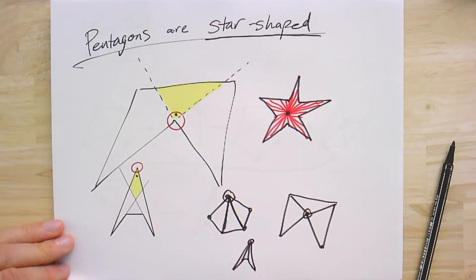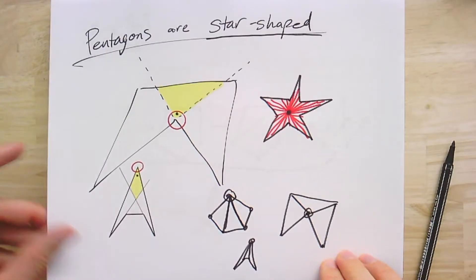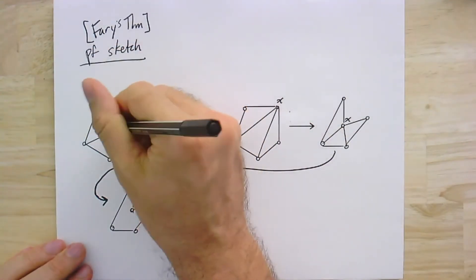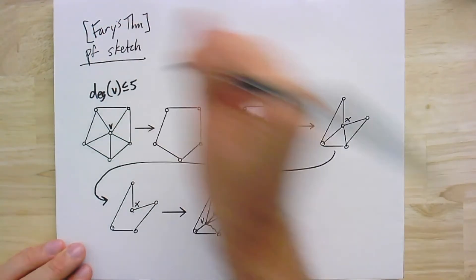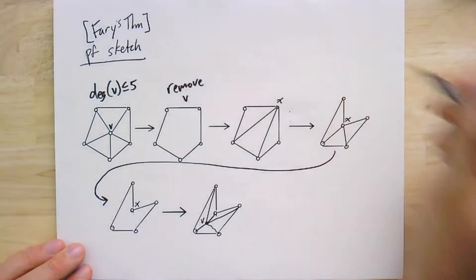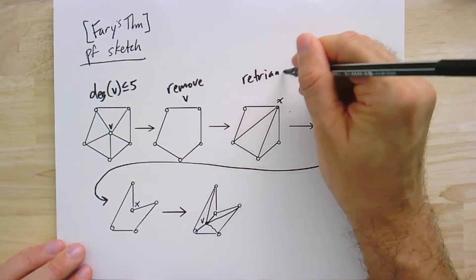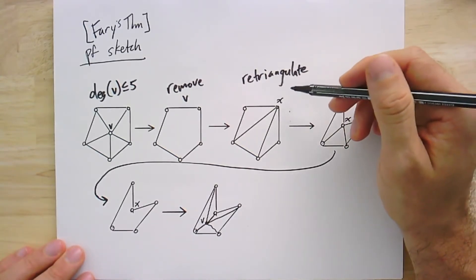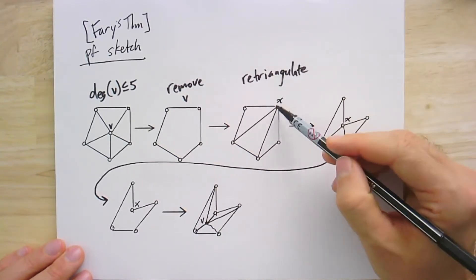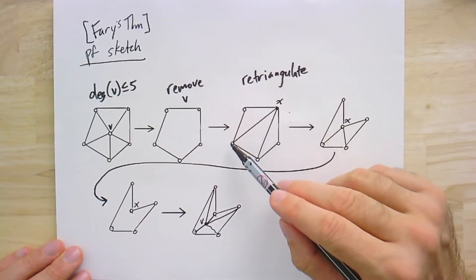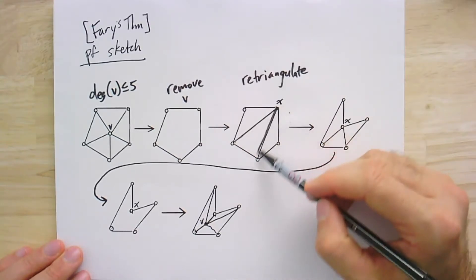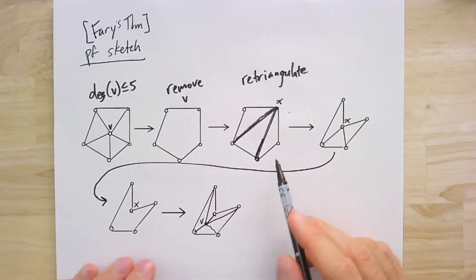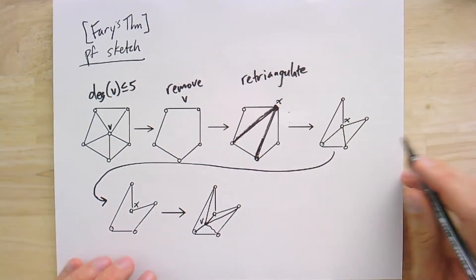Let's do this in pictures. We start with vertex V of degree at most five. We remove it and re-triangulate — adding edges on the graph level until all faces are triangles. We haven't embedded it yet, so we can choose which vertex gets extra edges across the five-gon left behind. This lets us identify which vertex will be near where we'll place V.